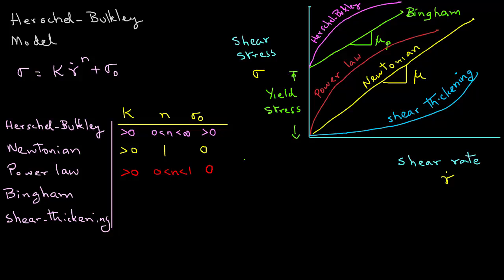In the case of Bingham type liquids, the value of k, the consistency coefficient, will be greater than zero, the value of n will be one, and the value for sigma zero will be greater than zero.